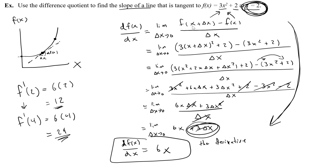To recap: we took the slope of the secant line, reworked it for a specific equation, got delta x off to the side, asked what happens when delta x is zero, and got the derivative — 6x — which gives tangent line slopes at any point. Pro tip: Newton and those original inventors of calculus just hired people to do all this calculating for them. Is there an easier way? We'll talk about that later. For now, the video is done.